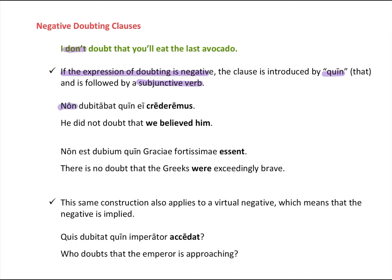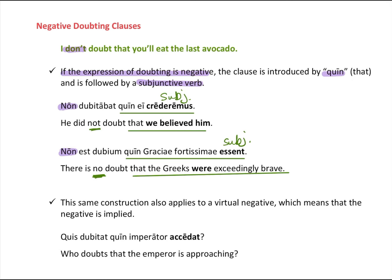The non in the sentence shows us it's negative. For example: non dubitabat — 'he did not doubt' — followed by quin ei crederemus — 'that we believed him' — where crederemus is in the subjunctive. Another example: non est dubium quin Graeci fortissimi essent — 'there is no doubt that the Greeks were exceedingly brave' — where essent is in the imperfect subjunctive. Clauses tend to be introduced by consistent words, which helps us identify them.